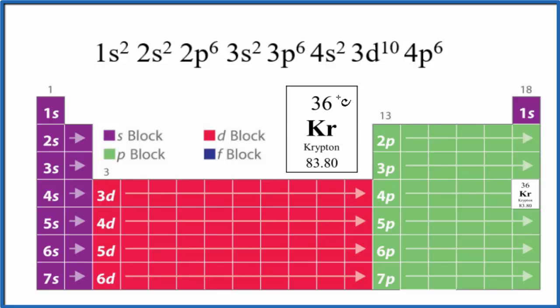If we look at the periodic table, this 36 is the atomic number. Since krypton is neutral, there's no negative or positive sign here. The number of protons equals the electrons, so we have a total of 36 electrons for the configuration.